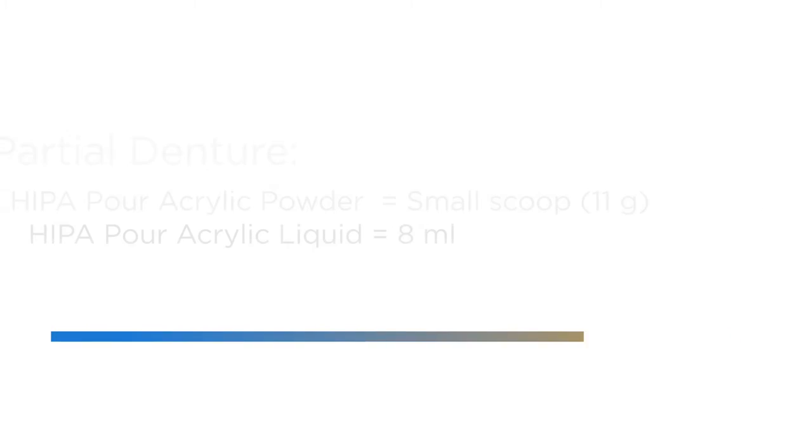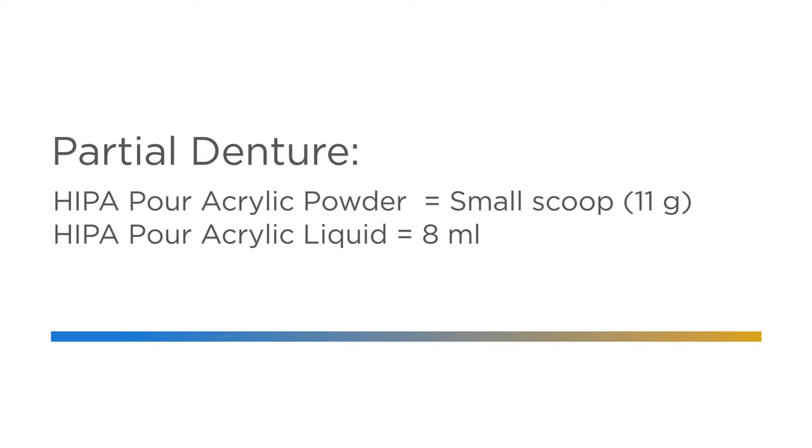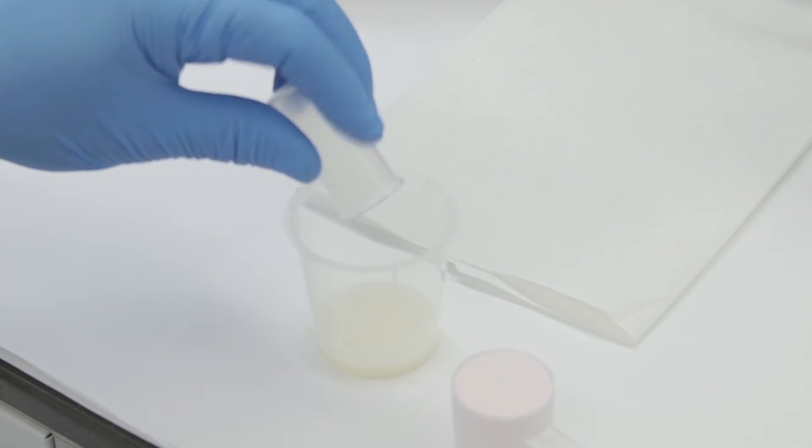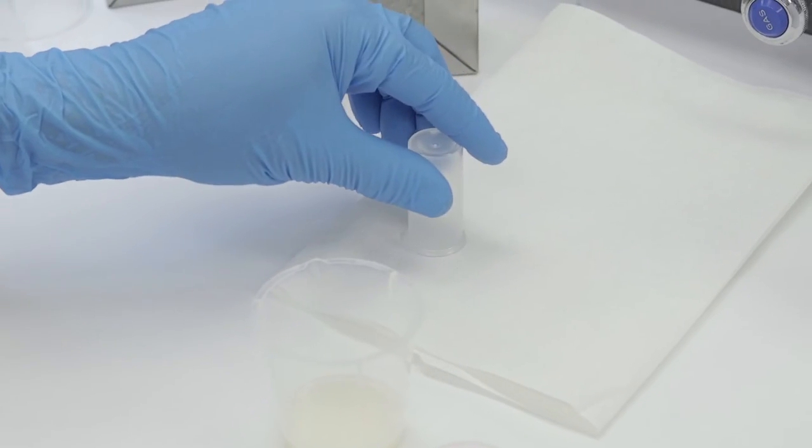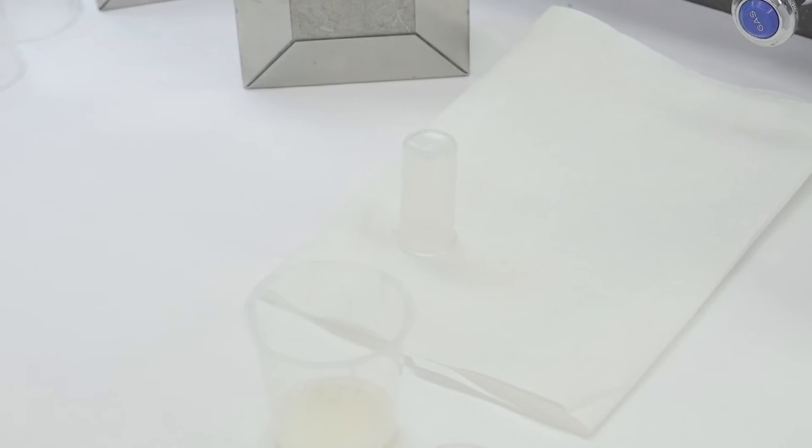For the fabrication of a partial denture, use one small scoop or 11 grams of HIPAA pore acrylic powder and 8 milliliters of HIPAA pore acrylic liquid measured with the HIPAA liquid vial. After measuring the liquid, invert the vial on a paper towel to allow residual liquid to drain.